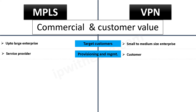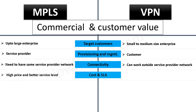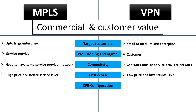For connectivity, MPLS requires the same service provider network, in contrast to VPN which can work outside one service provider domain. Cost and SLA for MPLS is higher than VPN, so in a way we can say that investing more money provides better service availability. Another factor affecting the commercial aspect is ease of CPE configuration.